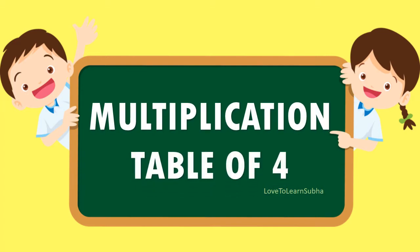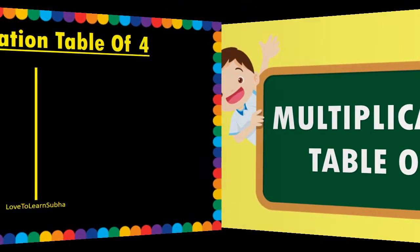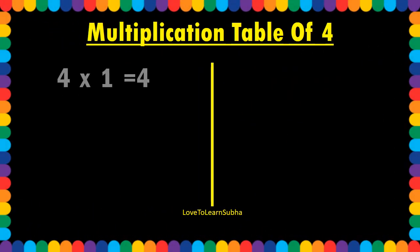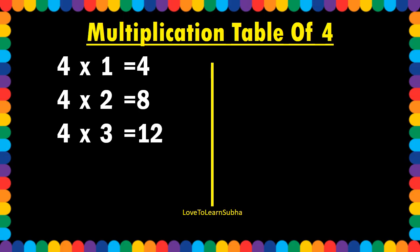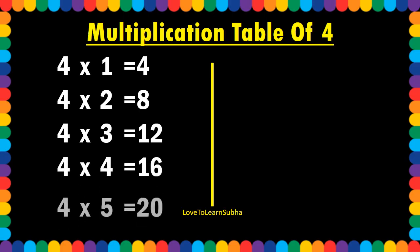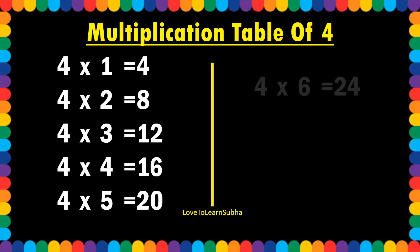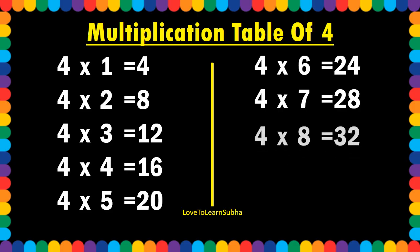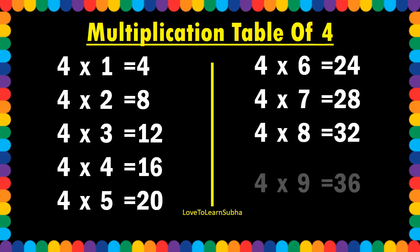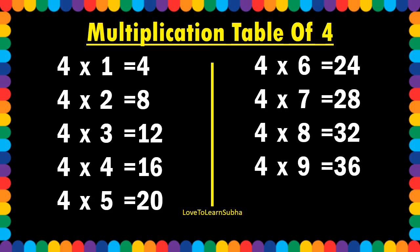Multiplication table of 4. 4 1s are 4, 4 2s are 8, 4 3s are 12, 4 4s are 16, 4 5s are 20, 4 6s are 24, 4 7s are 28, 4 8s are 32, 4 9s are 36, 4 10s are 40.